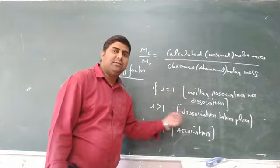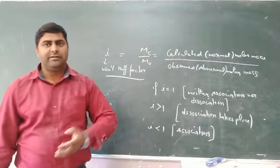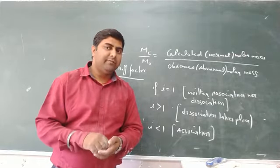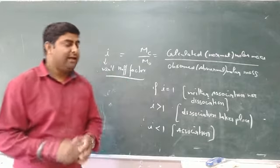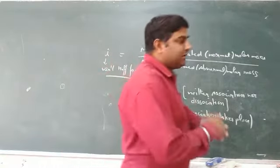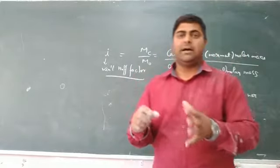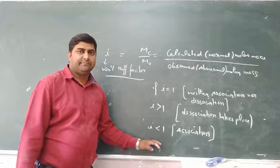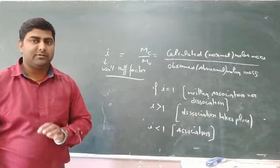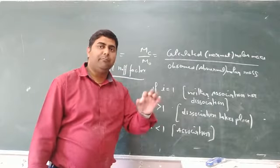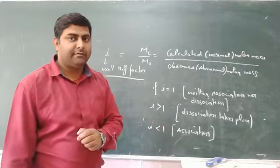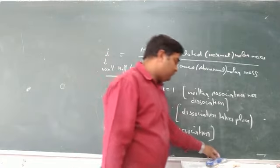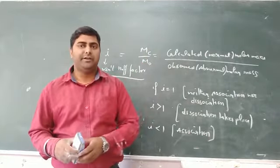To summarize: i equals 1 means neither association nor dissociation; i greater than 1 means dissociation; and i less than 1 means association. Colligative properties give different molar masses because of association or dissociation. Mostly, solute particles which are polar, ionic, or electrolytes undergo association or dissociation. We need to introduce the Van't Hoff factor i while calculating molar mass using the four colligative properties — i should be introduced on the right side of each equation derived from colligative properties.